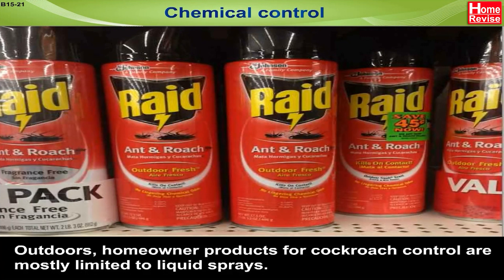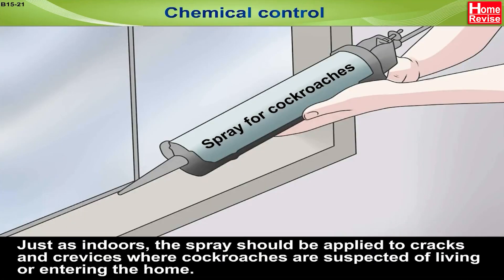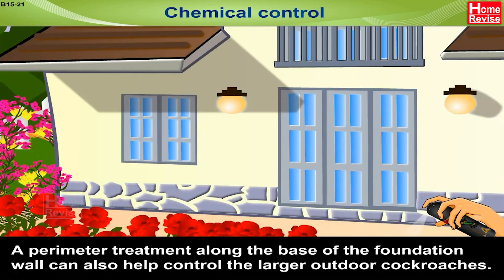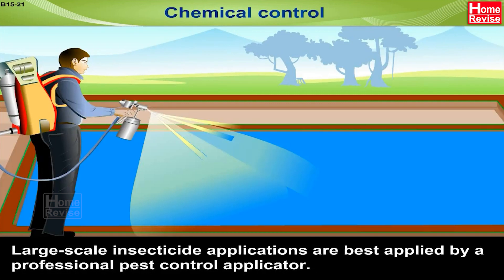Outdoors, homeowner products for cockroach control are mostly limited to liquid sprays. Just as indoors, the spray should be applied to cracks and crevices where cockroaches are suspected of living or entering the home. A perimeter treatment along the base of the foundation wall can also help control the larger outdoor cockroaches. Large-scale insecticide applications are best applied by a professional pest control applicator.